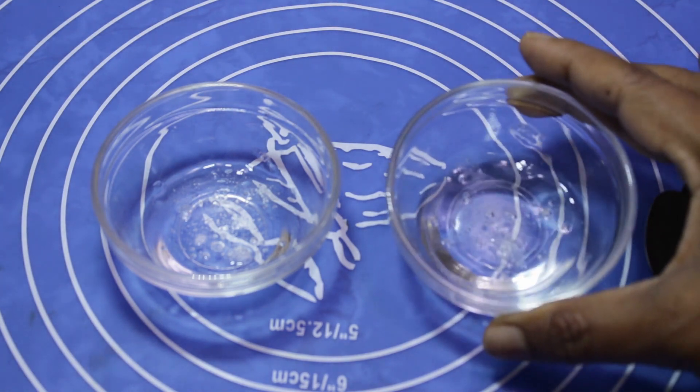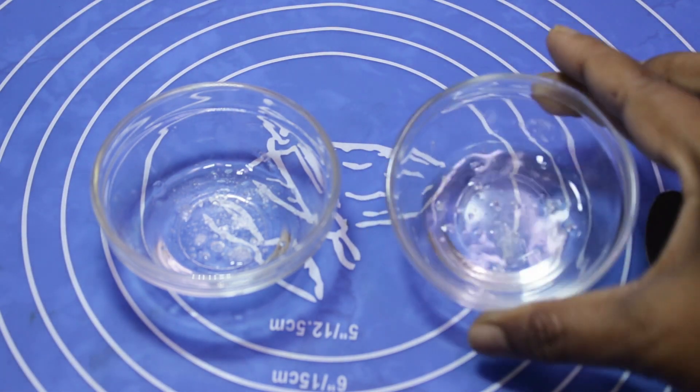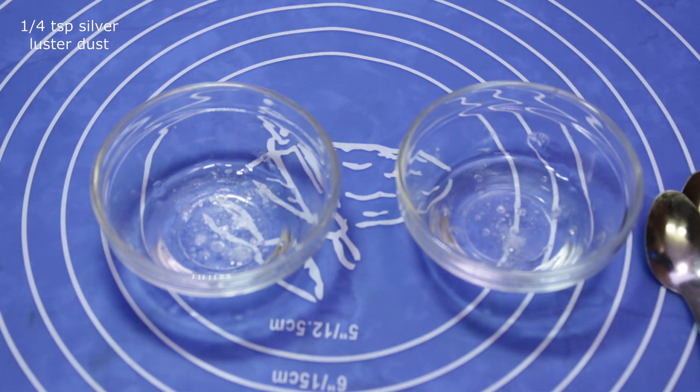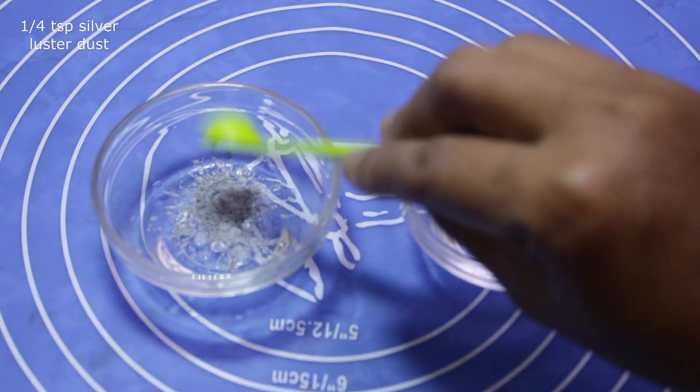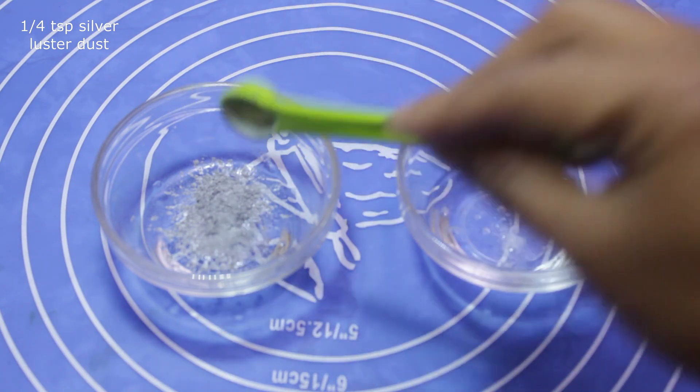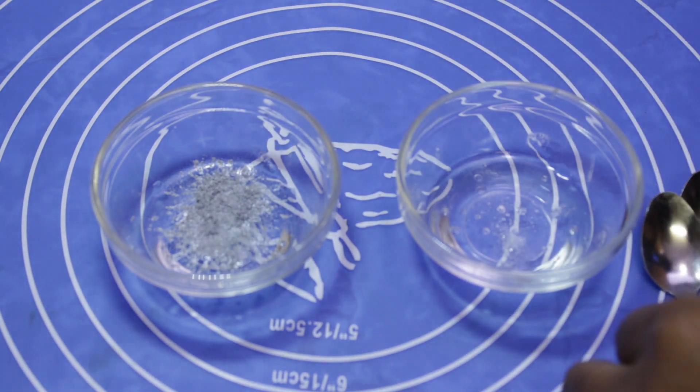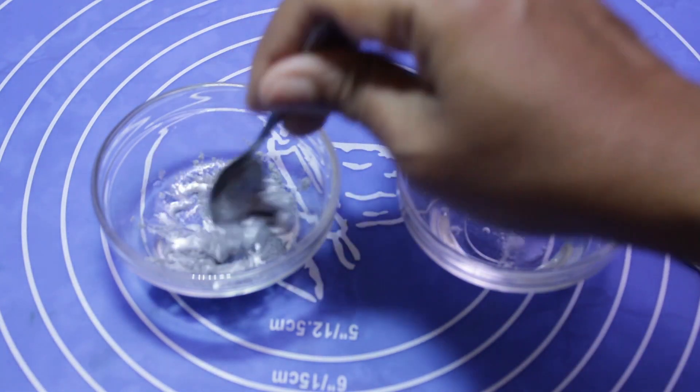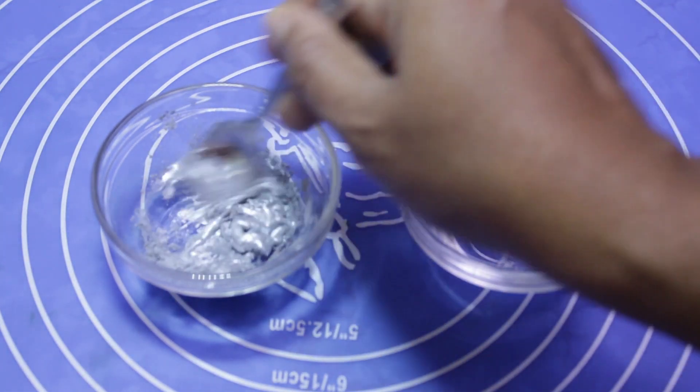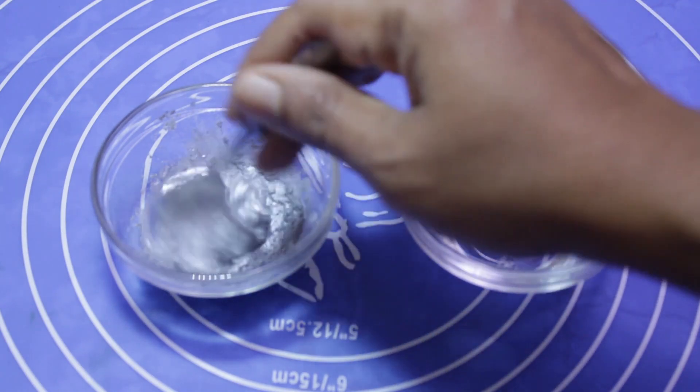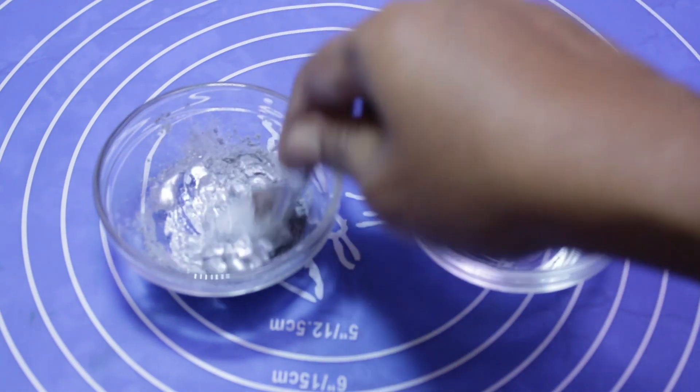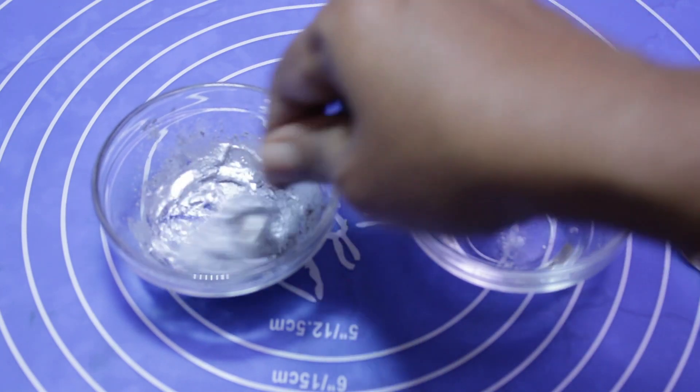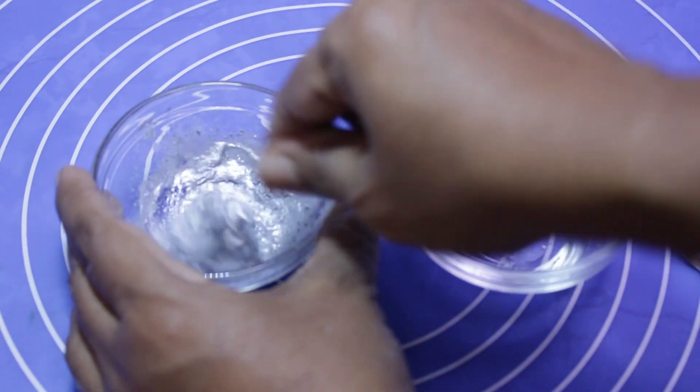After one hour you can see there is no white part, no lumps. Now we are adding silver first. One-quarter teaspoon. Mix it and add the silver.